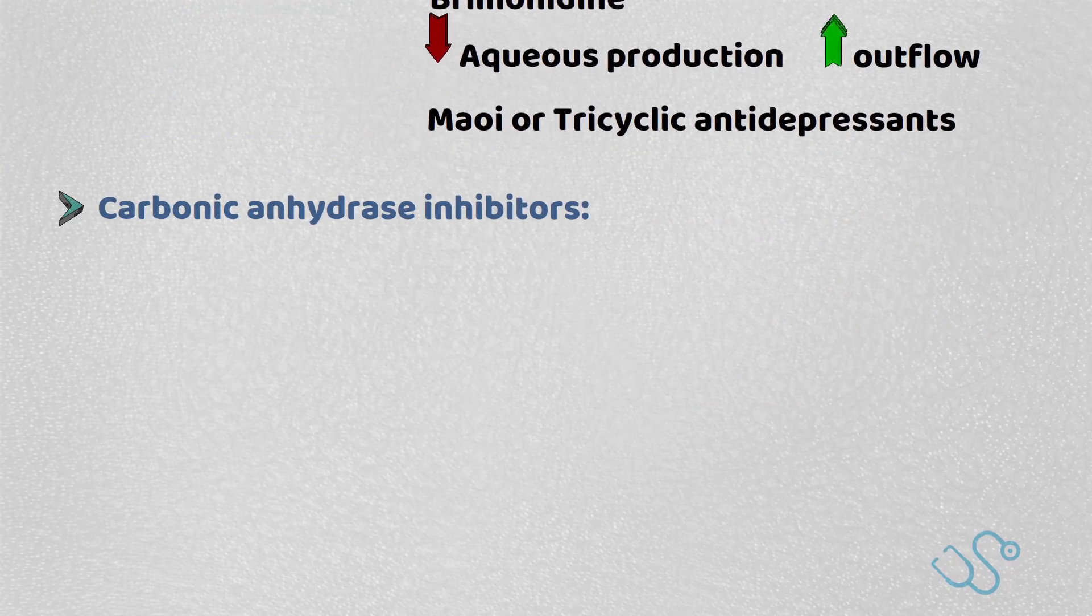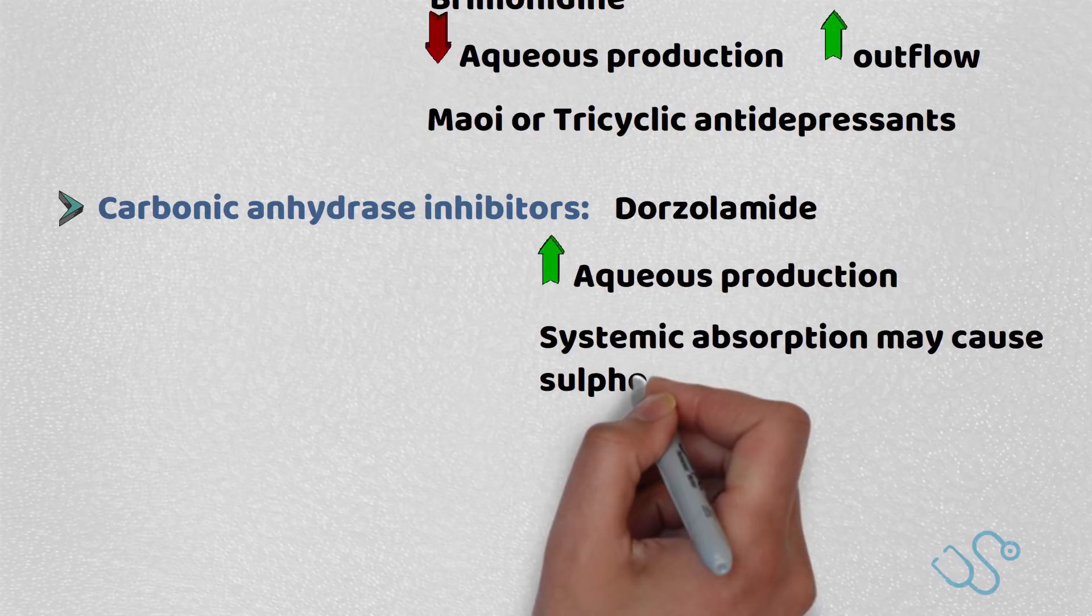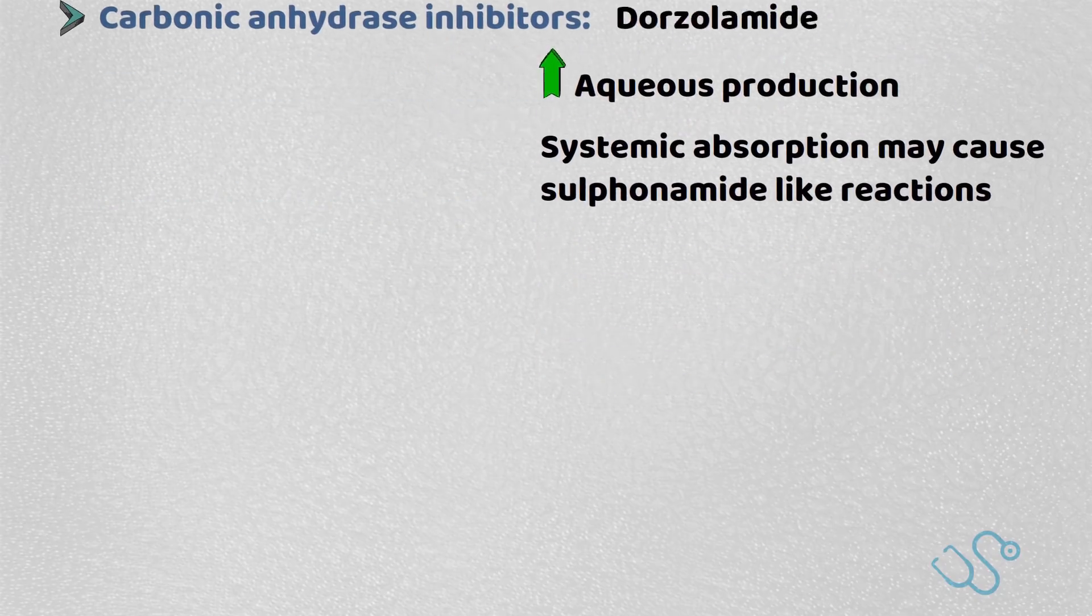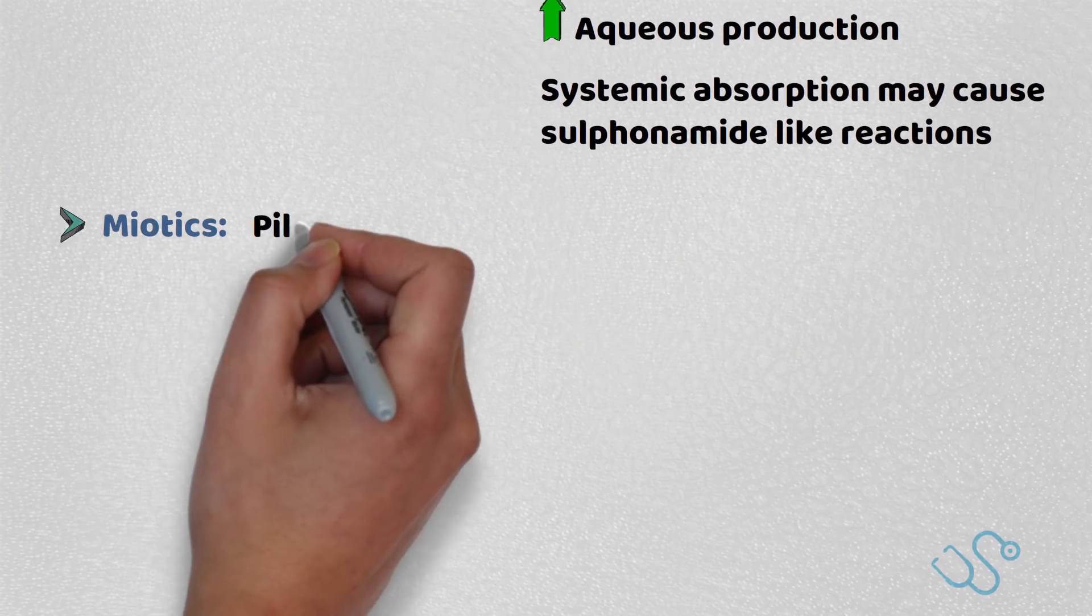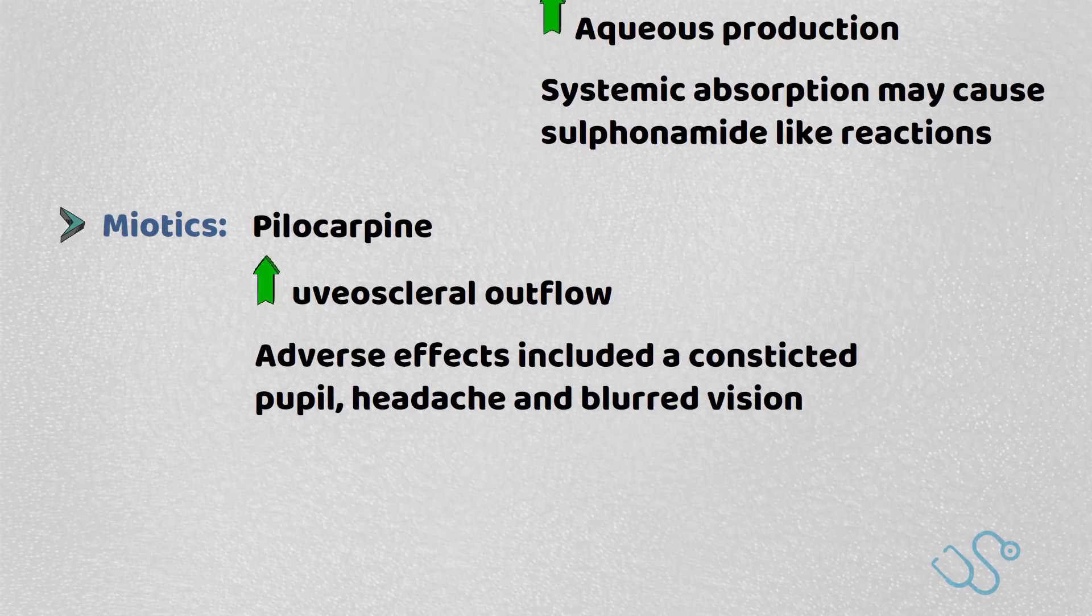Carbonic anhydrase inhibitors like dorzolamide also reduce aqueous humor production, but systemic absorption may cause sulfonamide-like reactions. Then there's miotics like pilocarpine which increase uveoscleral outflow, but they can cause constricted pupils, headaches, and blurred vision.